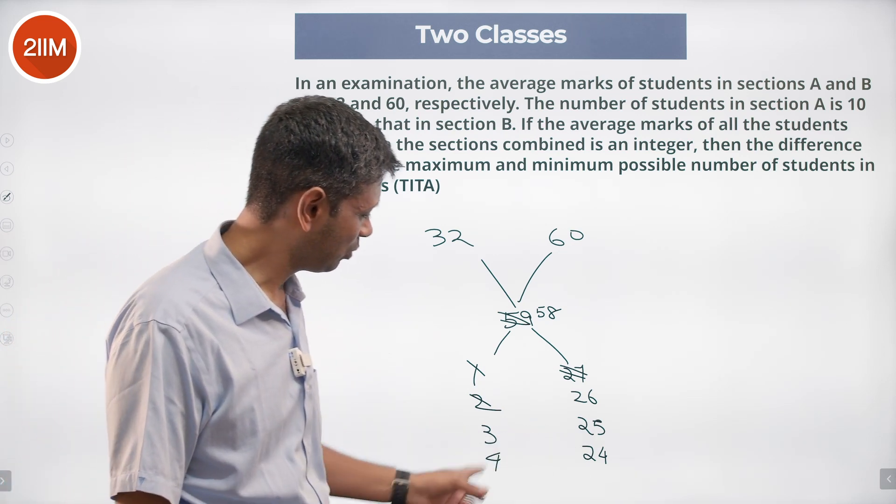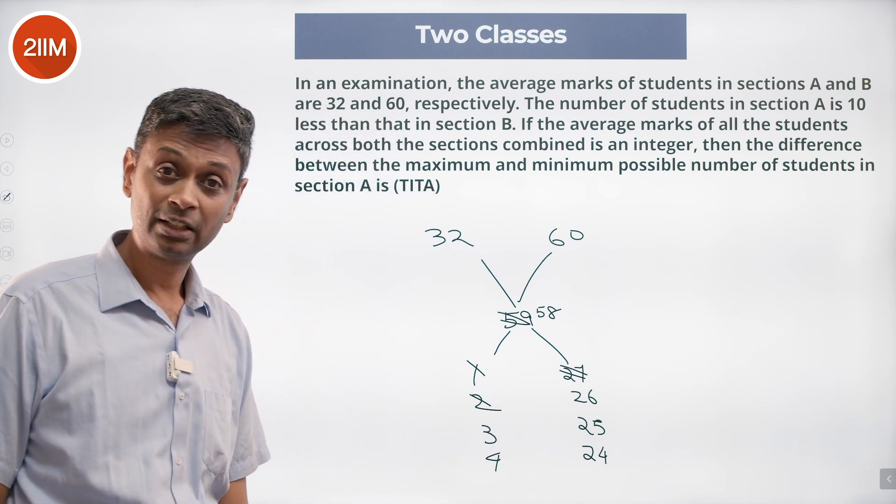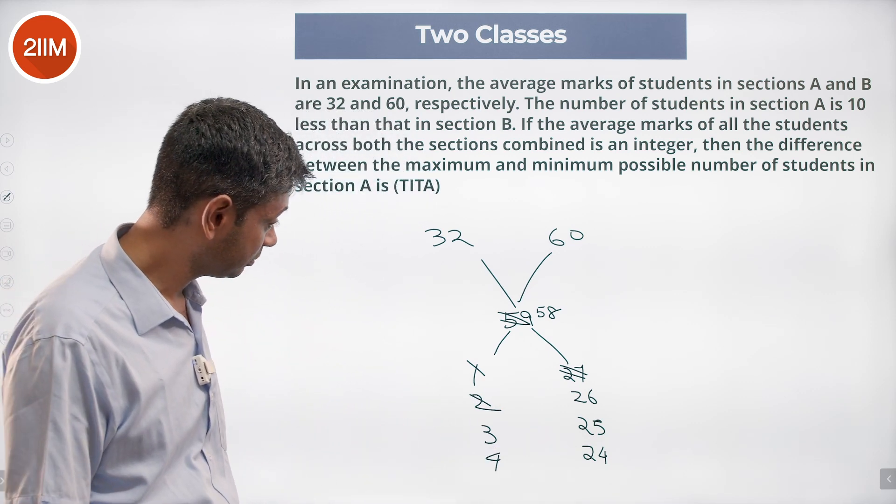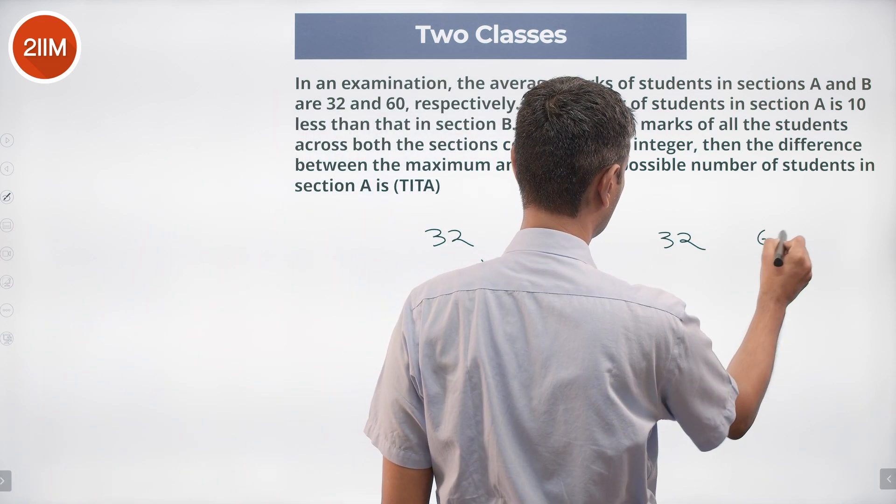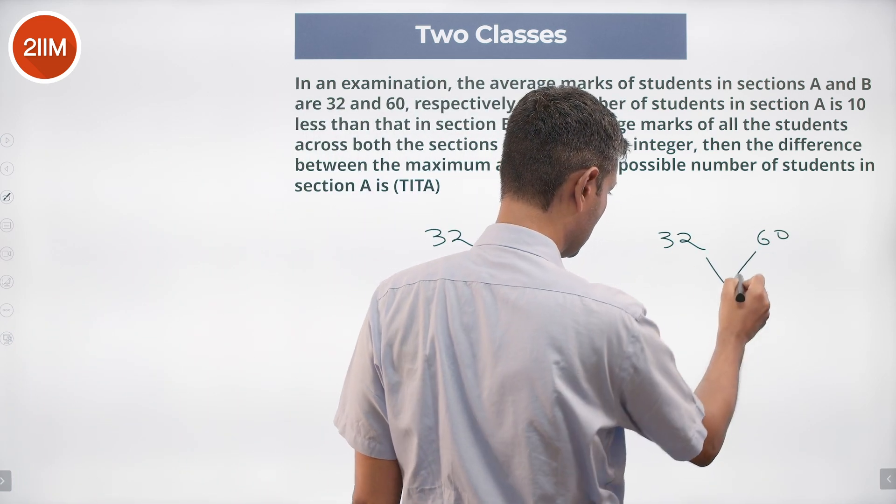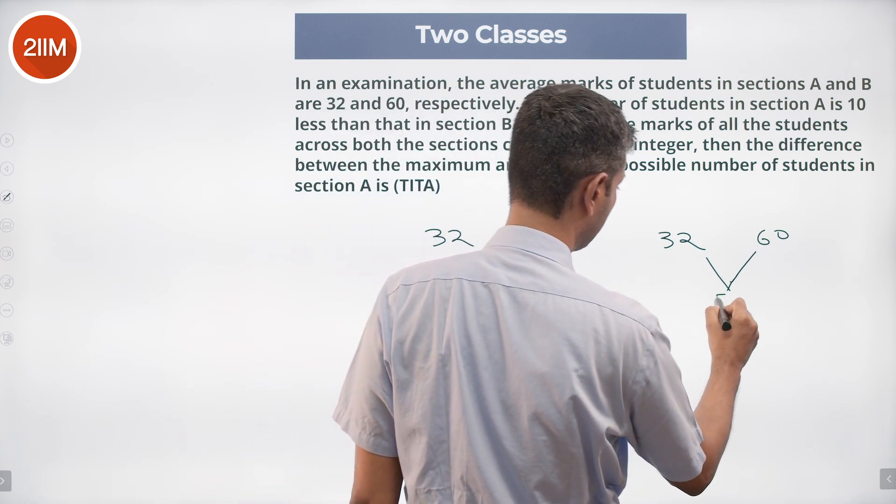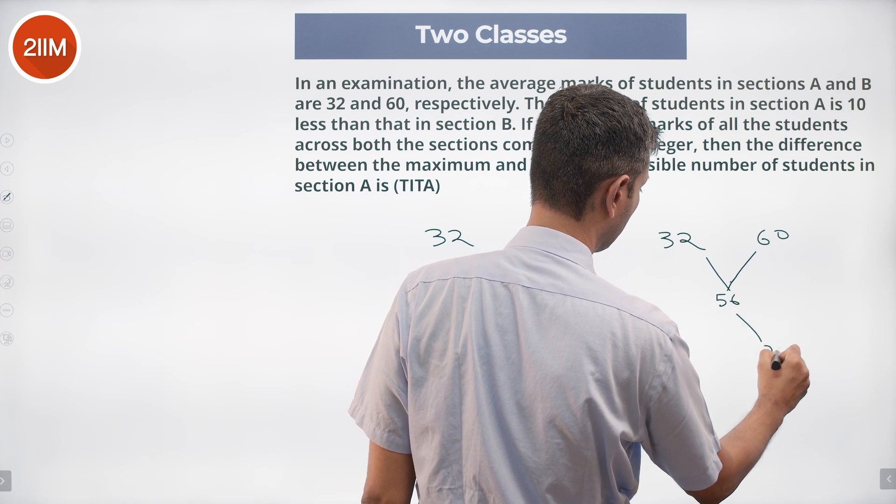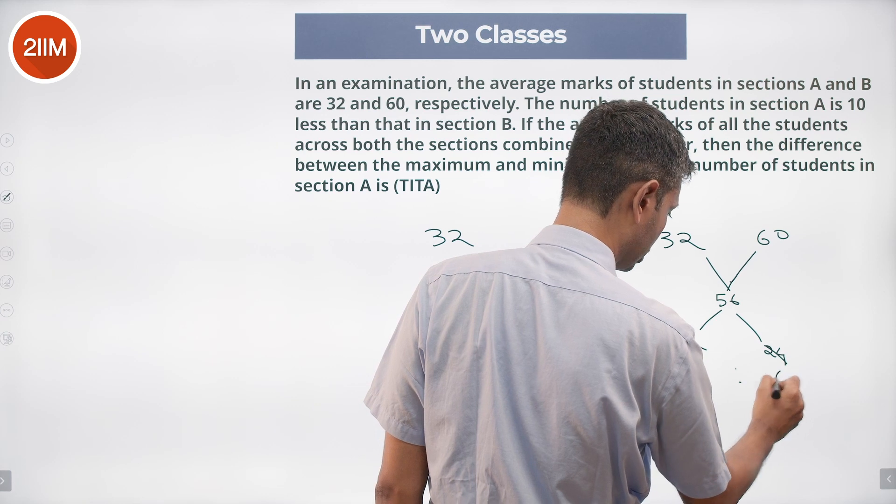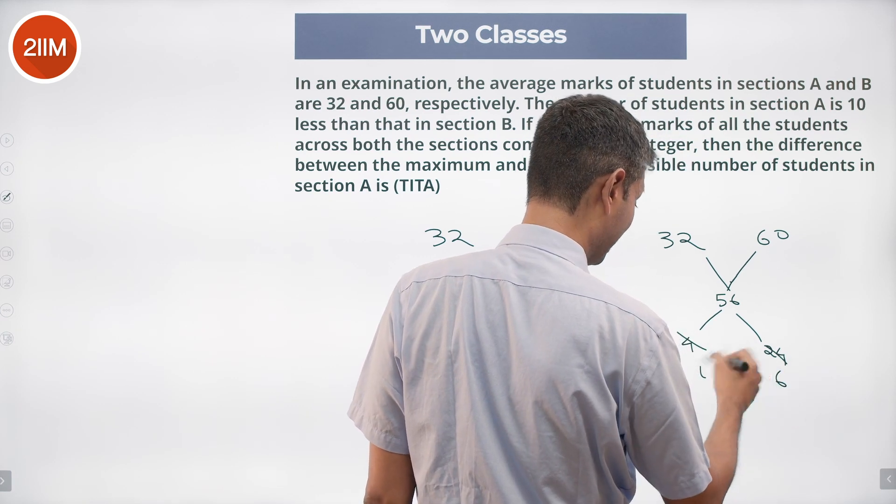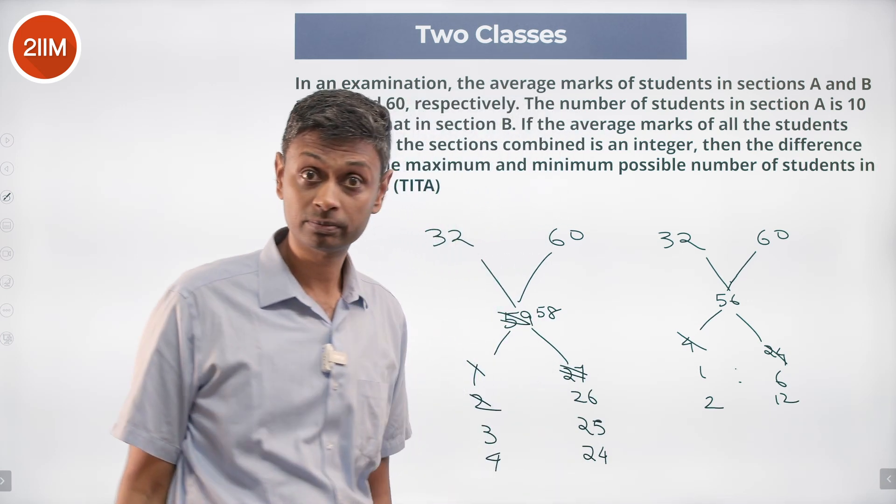This difference 4 and 24, that 4 to 24, the difference is 20X. 20X equal to 10, is that even possible? 32, 60, weighted average being 4 away from here, so this is 56. This is 24, this is 4, the ratio is 1 is to 6. Yep, this being 10, the difference being 10, that means this is 2, this is 12, that is possible. Fine.